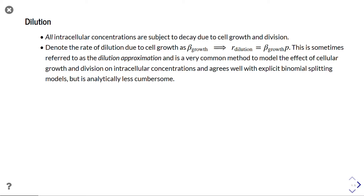There are two main sources of protein decay. The first is dilution: all intracellular concentrations decay due to cell growth and division. The dilution rate is beta_growth times protein concentration p. This dilution approximation is a common method to model the effect of cellular growth and division on intracellular concentrations, and agrees well with explicit binomial splitting models while being analytically less cumbersome.